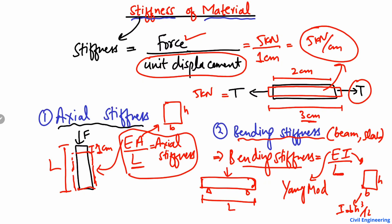So in bending stiffness it is the moment required to produce a unit rotation, while in axial stiffness it is the force required to produce a unit deformation. These are the two main types of stiffness. Hope you guys understand — don't forget to subscribe to our channel for daily civil engineering videos. Thank you for watching.